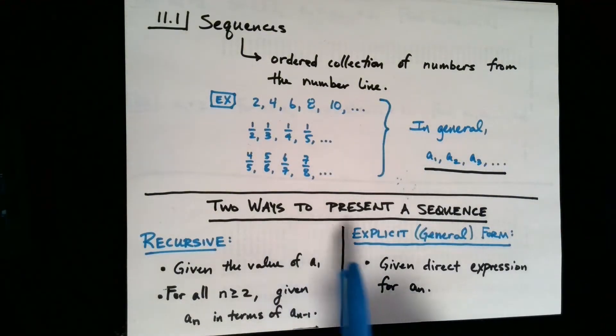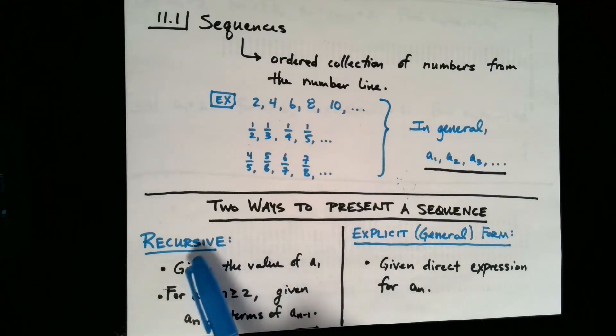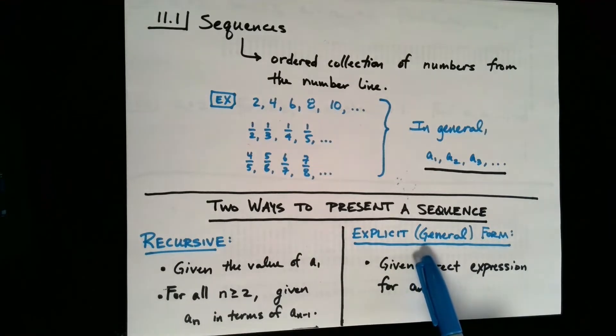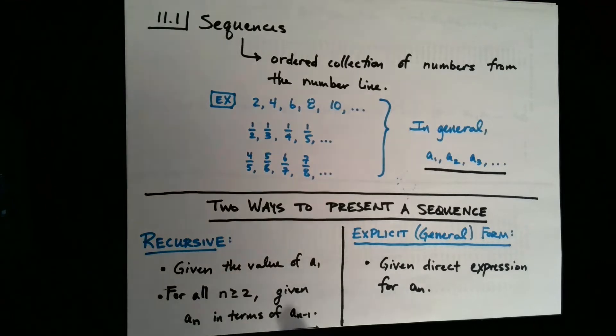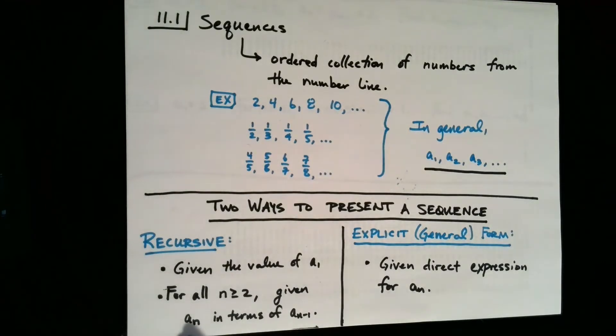Now, when we have sequences, there's frequently two ways to present them concisely. One way is called a recursive presentation, and the other an explicit or general form. When it comes to a recursive presentation, we are first going to be given what a₁ is, the first number in our sequence. And what we'll also be given, for every n greater than or equal to two, is a way to form aₙ in terms of aₙ₋₁. So what this allows us to do is to form a₂ in terms of a₁, to form a₃ in terms of a₂, to in general form each next number in terms of the previous.